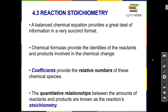Reaction stoichiometry. In section 4.1 we learned how to balance chemical equations, and we learned that a chemical equation is kind of like a recipe in that it provides the ingredients and what you're going to make. The ingredients are like the reactants, and the finished item is like the products of a chemical reaction.